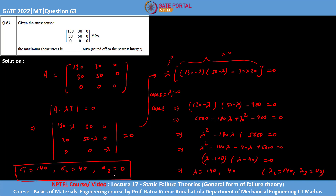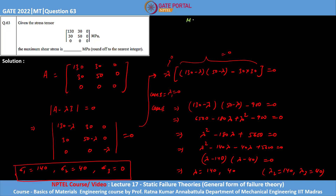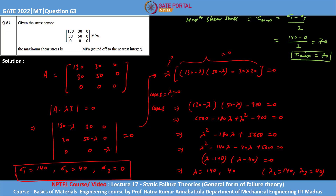Now that we have the principal stress values for this stress tensor, we can calculate the maximum shear stress. The maximum shear stress formula is τ_max = (σ₁ − σ₃) / 2. Substituting the values: (140 − 0) / 2 = 70. So 70 megapascal is our maximum shear stress and the correct answer. Thank you.